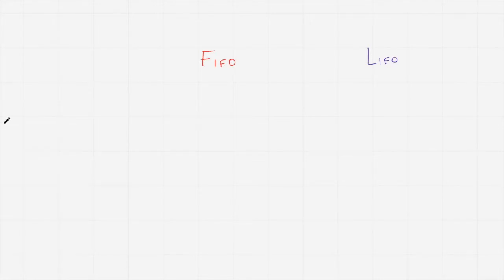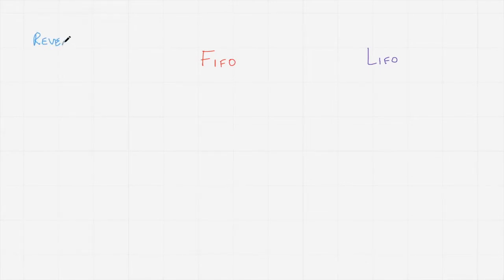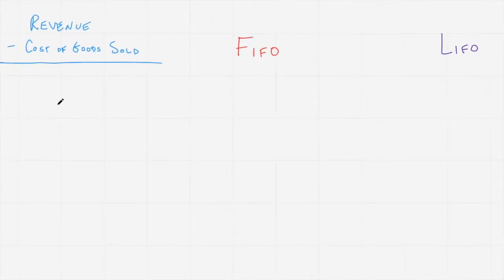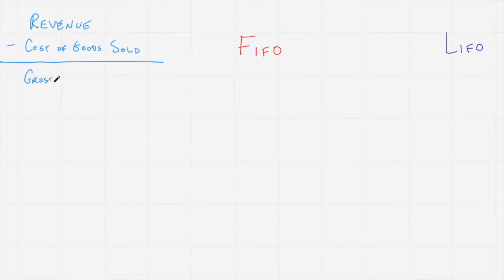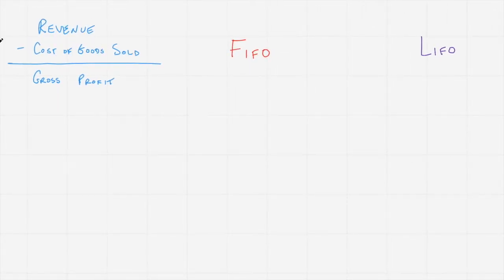If you remember from our talk about the income statement, the first part of the income statement looks like this. We've got revenue minus cost of goods sold, which gives us our gross profit. The gross profit tells you how much more you're selling a good for compared to what it costs you to produce or acquire that good.